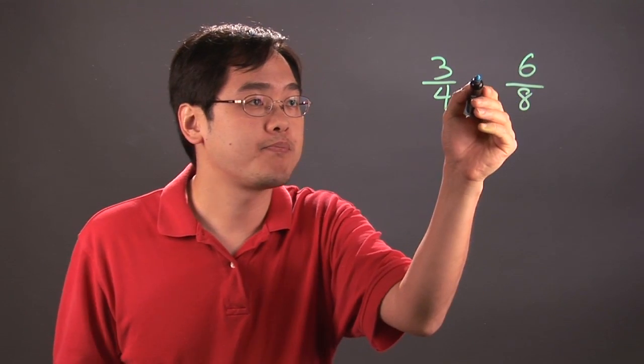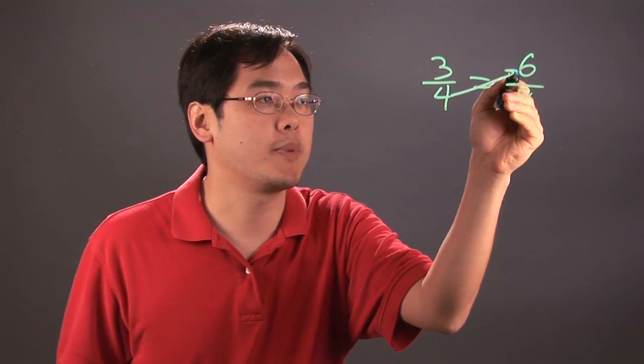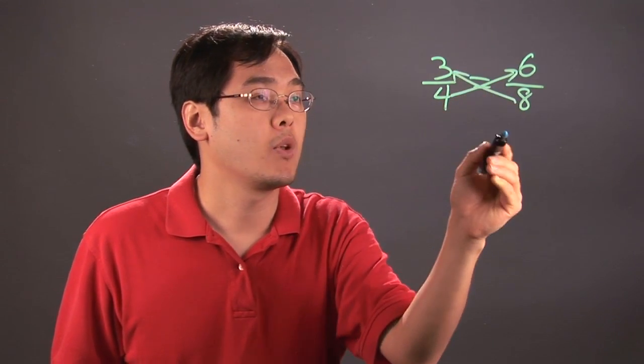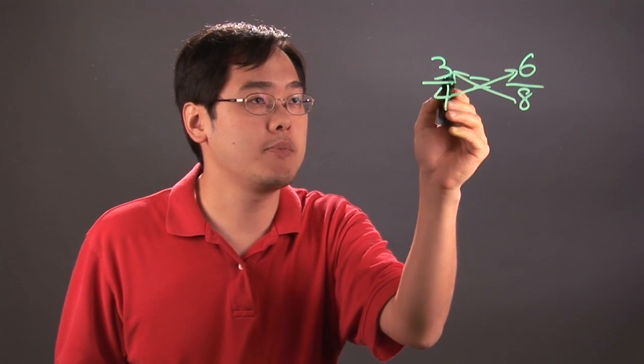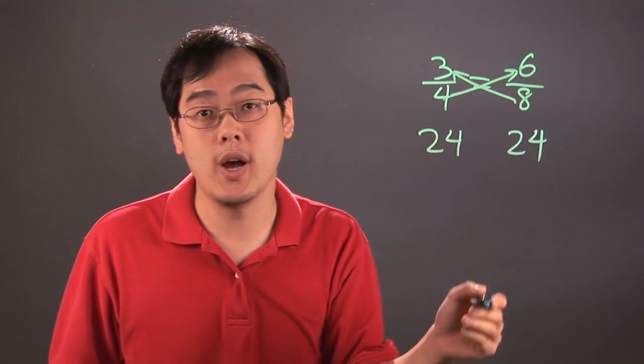So what you want to do is set them equal to each other, just as a hypothetical, and then you do the cross multiplication. So what you want to think about is 8 times 3, which is going to give you 24, and then 4 times 6, and that's 24 as well.